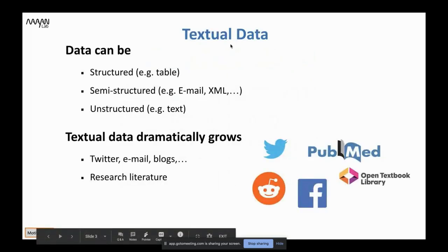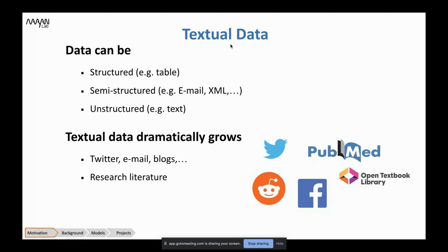As you have experienced in the lab, you were working with many types of data. Data can be basically categorized into three different categories or groups. The first type is structured data — for example, tables. Another type of data can be semi-structured, for example, emails.